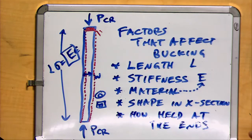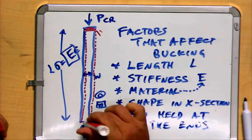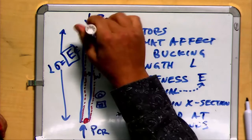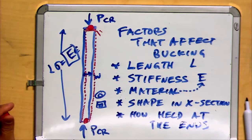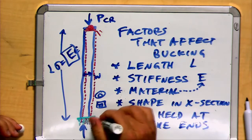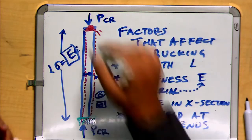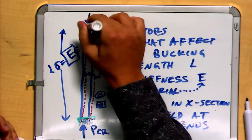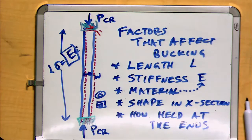In many of our analyses, we've considered beams that have a pin that are allowed to rotate at the ends, or we can consider them as being fixed where they're not allowed to rotate at the ends. And the choice that you make in how they're supported will also affect the buckling load, the critical buckling load.